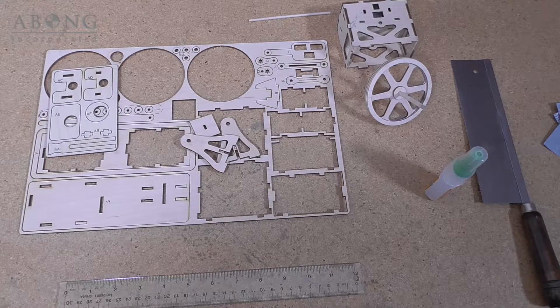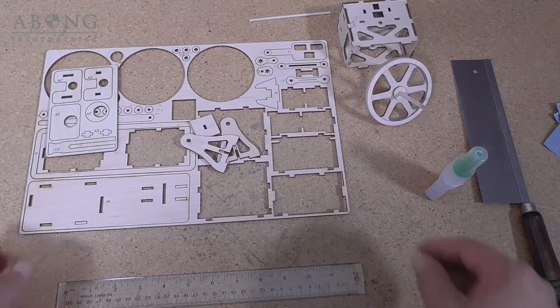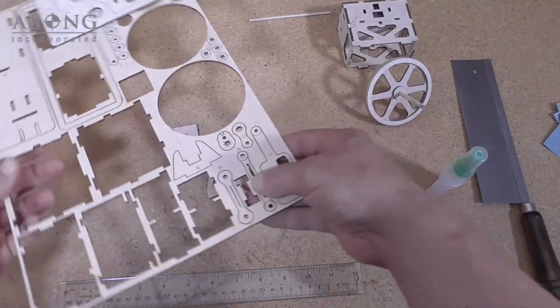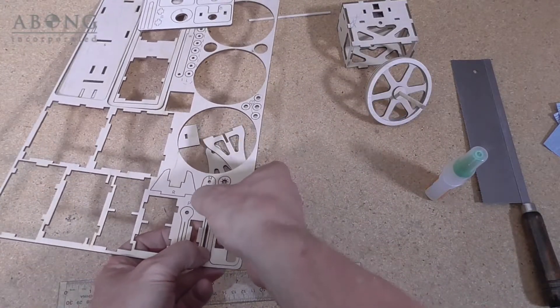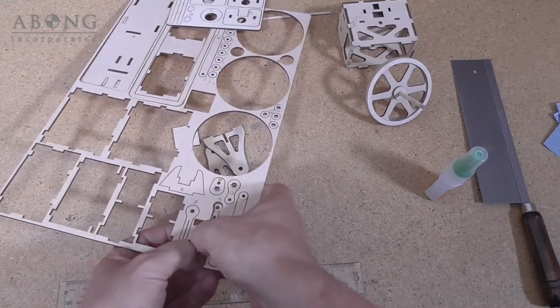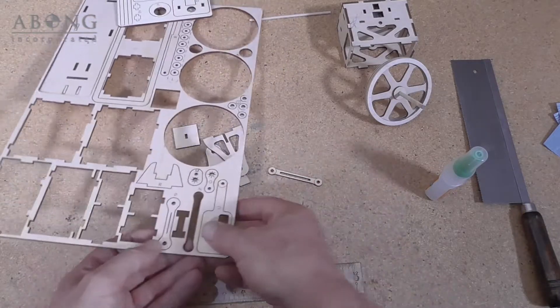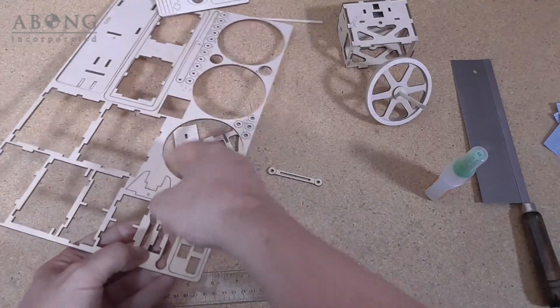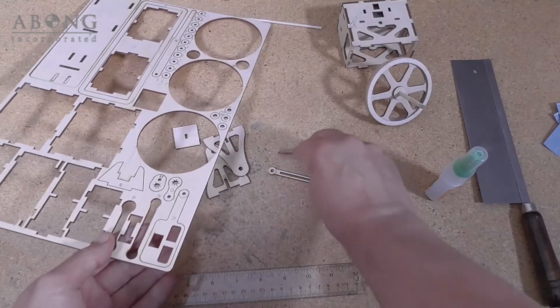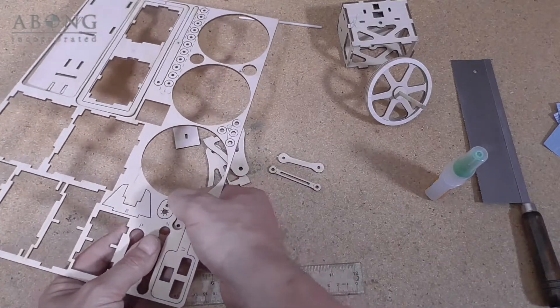With the flywheel done, it's time to start on the crank parts. We'll pop these parts out. We're going to need the eccentric crank connector and the main crank and connector.